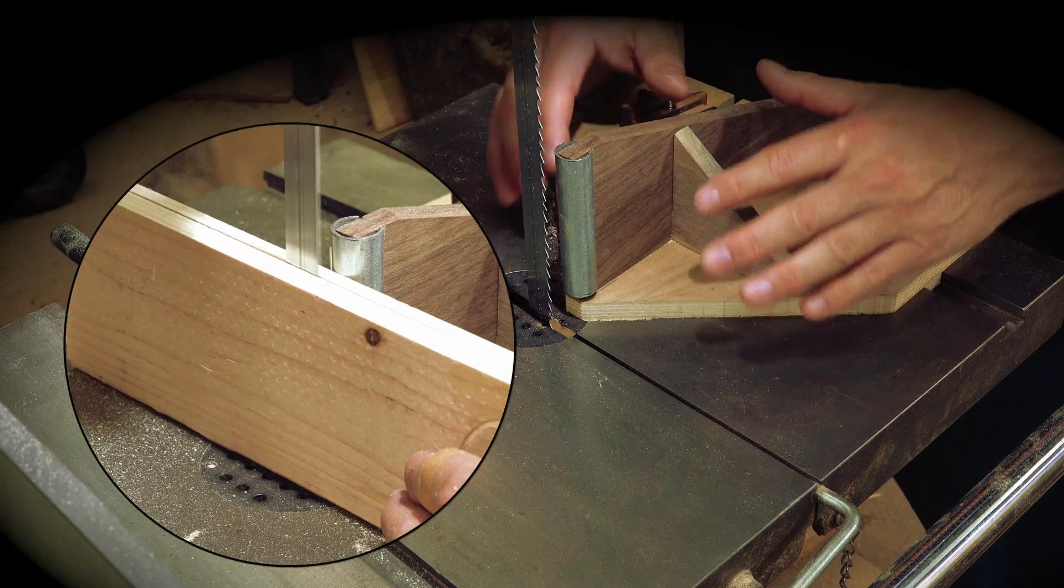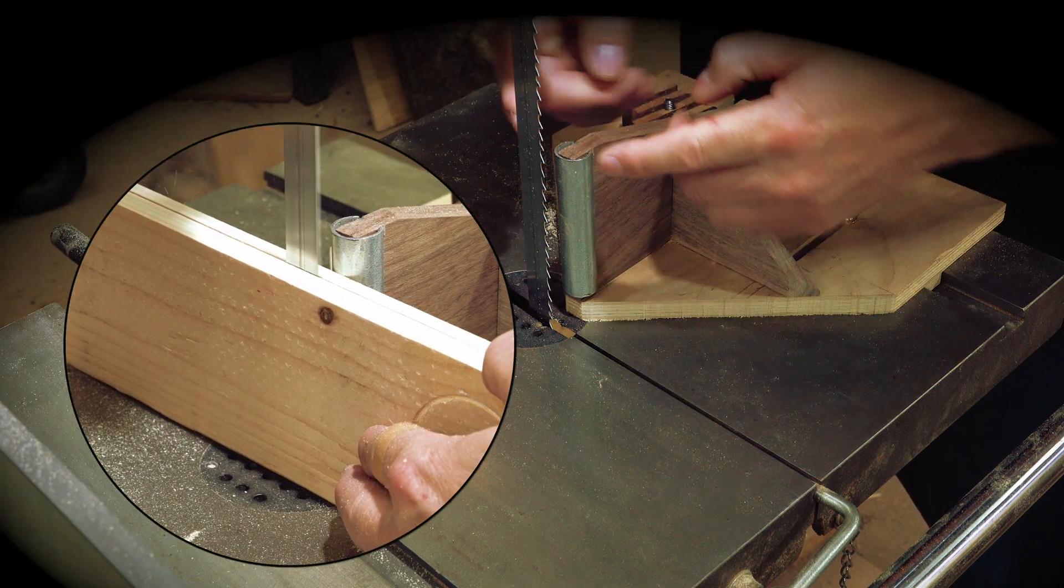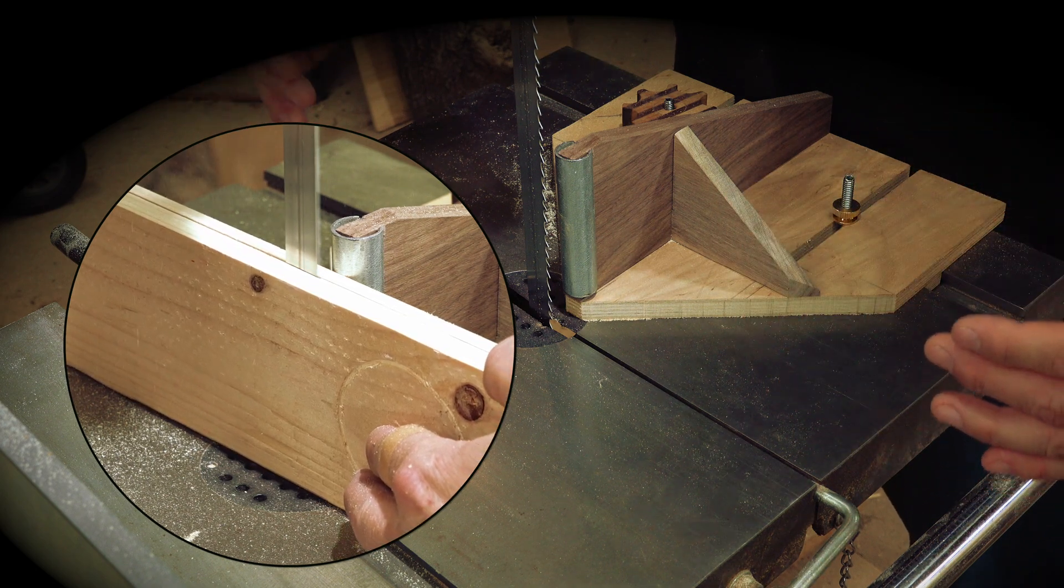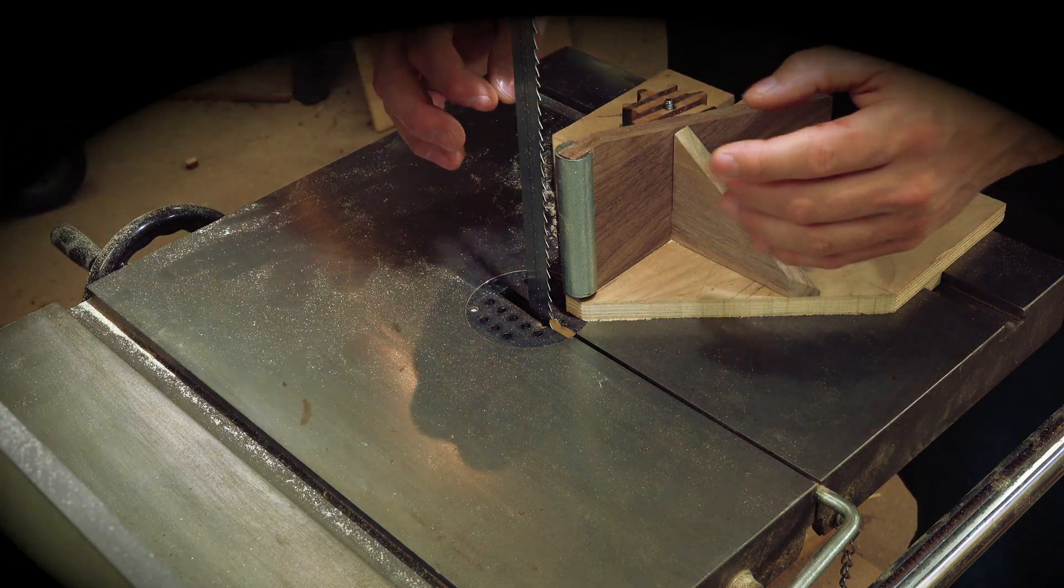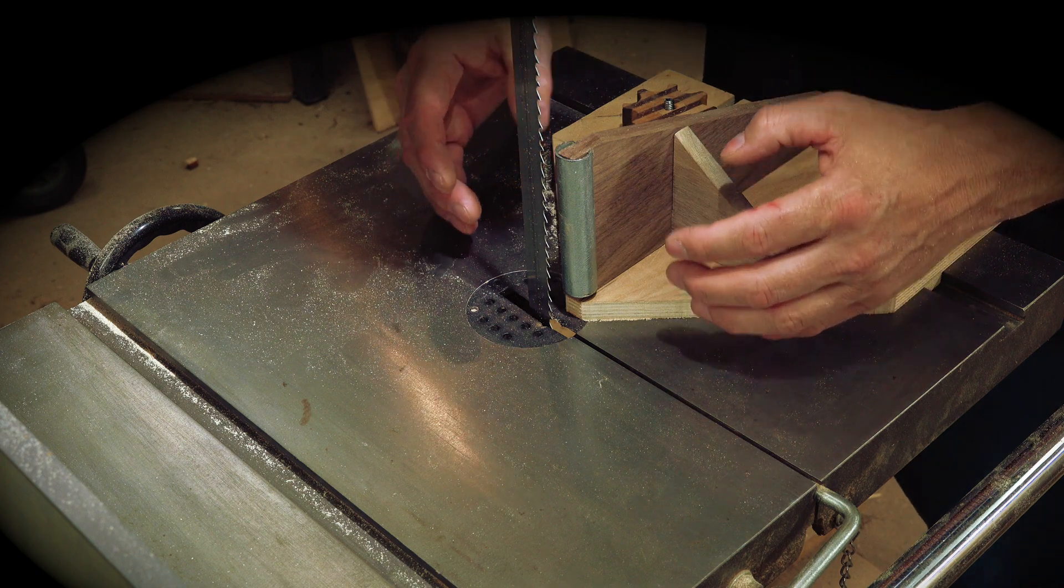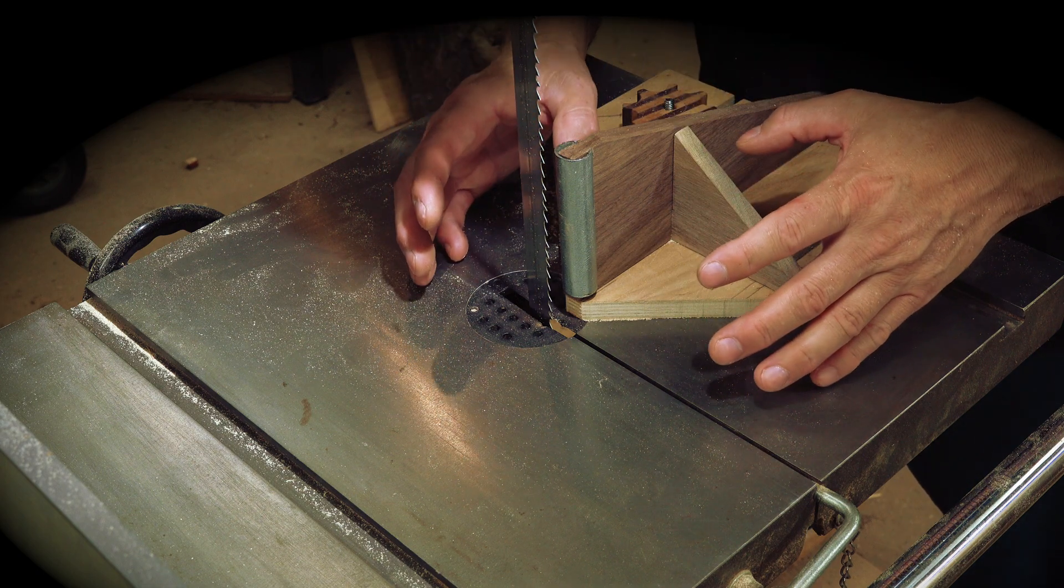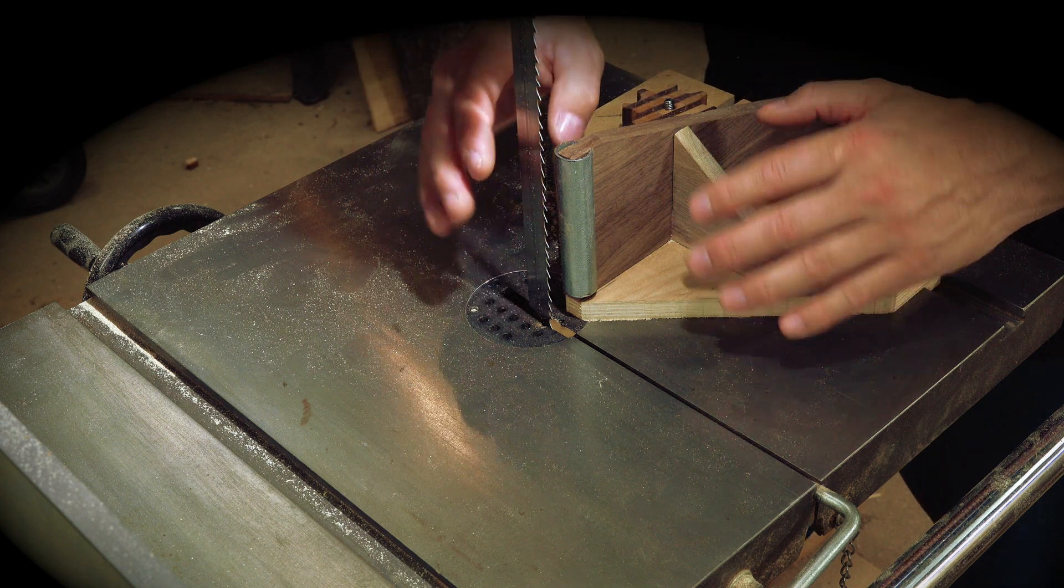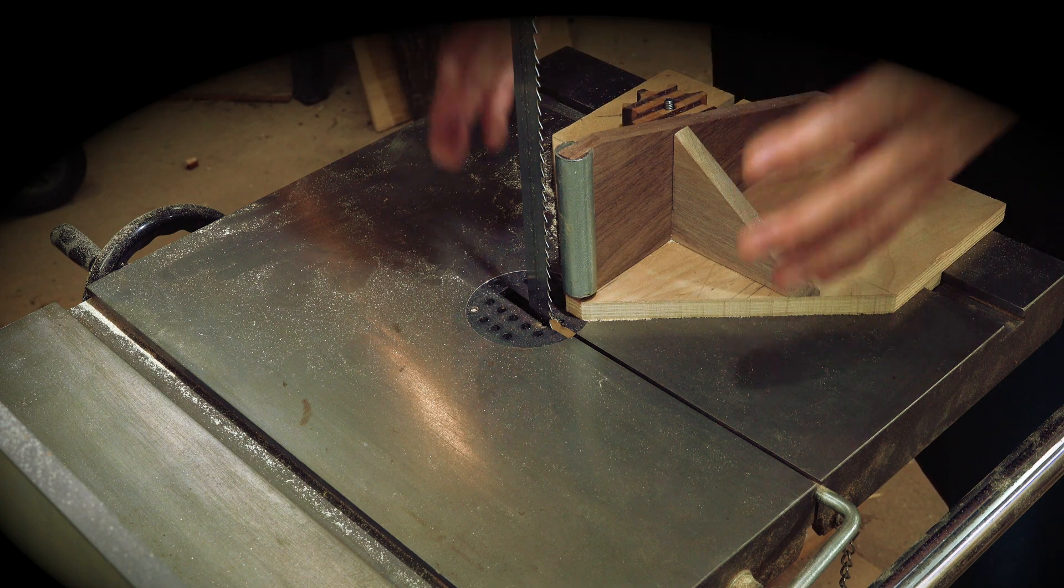Basically what that does is it gives you one single point that allows you to pivot your work so that you can cut as you resaw. What's really nice about this is that it allows the stock to open up so you're not wearing your blade down. Fences are really bad about damaging the teeth in the long run. So this is a really good solution.